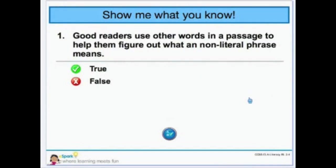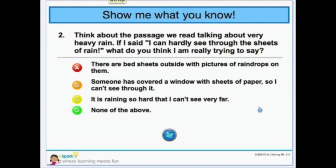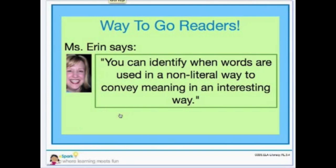So let's answer some questions. Good readers use other words in a passage to help them figure out what a non-literal phrase means — is that true or false? That is true; we just did that. Now think about the passage we read about very heavy rain. If I said, 'I can hardly see through these sheets of rain,' what do you really mean? That there are bed sheets with raindrops? Someone covered a window with paper sheets? It's raining so hard you can't see very far? Or none of the above? If you said C, you were correct. Way to go, readers! You can identify when words are used in a non-literal way to convey meaning in an interesting way.